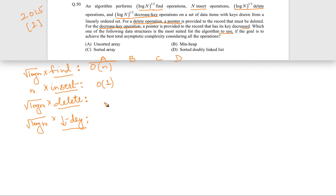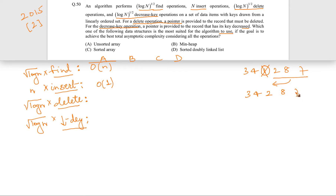With the pointer given for delete, we can directly access that element. However, after deletion the remaining elements must be shifted left. For example, in a list [3, 4, 1, 2, 8, 7], deleting 1 (with its pointer) gives [3, 4, 2, 8, 7], but shifting k remaining elements is O(k), which in the worst case (deleting the first item) is O(n). So delete is O(n) for an unsorted array.